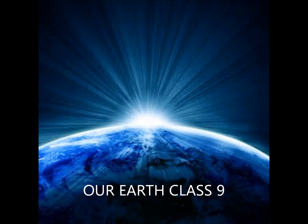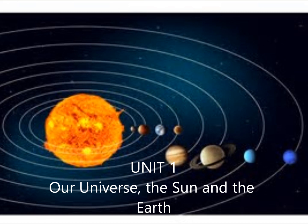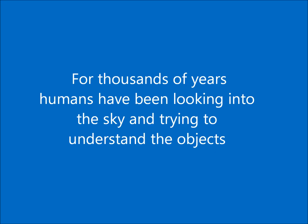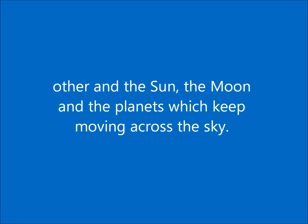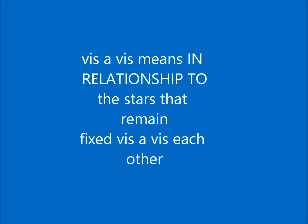We continue chapter 'Our Earth' for Class 9. The first unit is 'Our Universe' with the heading 'Our Universe: The Sun and the Earth.' For thousands of years humans have been looking into the sky and trying to understand the objects that shine there — the stars that remain fixed vis-a-vis each other, and the sun, the moon, and the planets which keep moving across the sky. Vis-a-vis means 'in relationship to.'